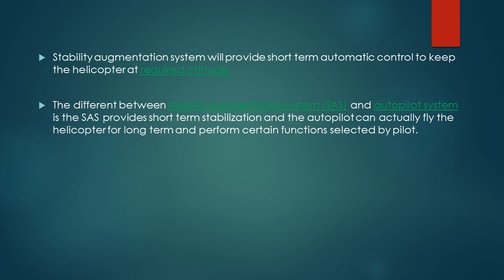And perform certain functions selected by the pilot. So the main difference is the SAS is used when we want to stabilize the attitude or the movement of the helicopter in a short term.